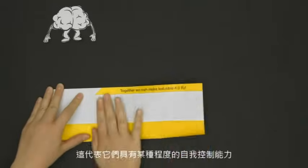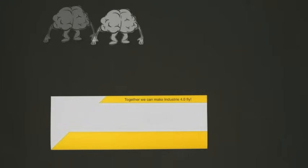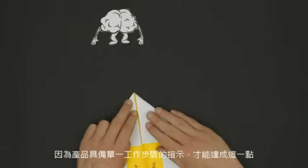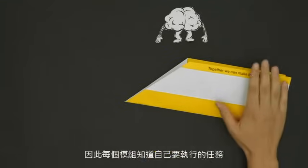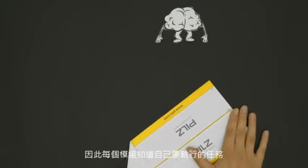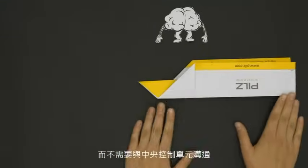This means that they have a certain degree of self-control. This is possible because the instructions for the single work steps are right there on the product. So each module knows what to do without having to communicate with the central hub.